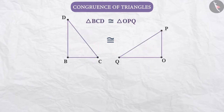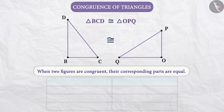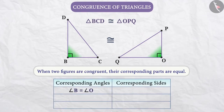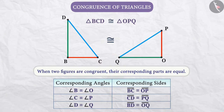When two figures such as two triangles, triangle BCD and triangle OPQ, are congruent, in such a case the corresponding parts are equal. Therefore, we can say that angle B is equal to angle O, angle C is equal to angle P, and angle D is equal to angle Q. Similarly, side BC is equal to side OP, side CD is equal to side PQ, and side BD is equal to side OQ.